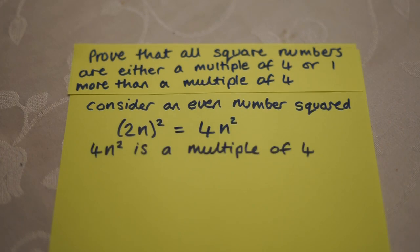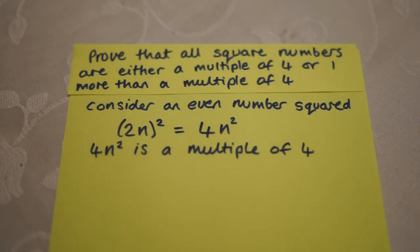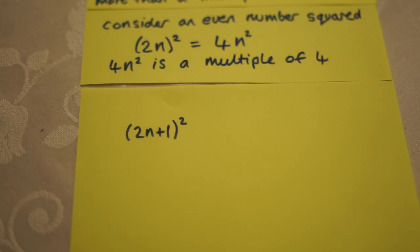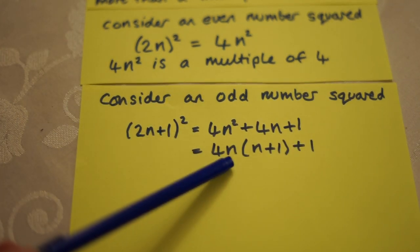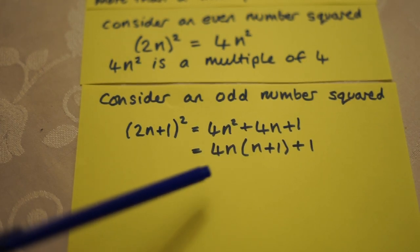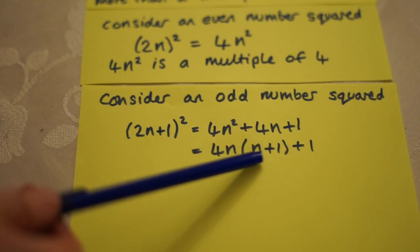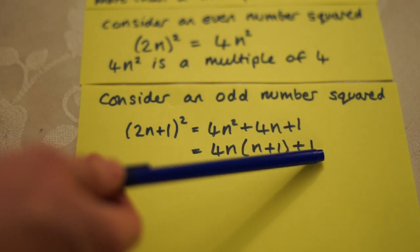Because an odd number is one more than an even number, we can write any odd number in the form 2n plus 1, where n is a positive integer. If we square an odd number, we get this. We can see that this is a multiple of 4 plus 1.